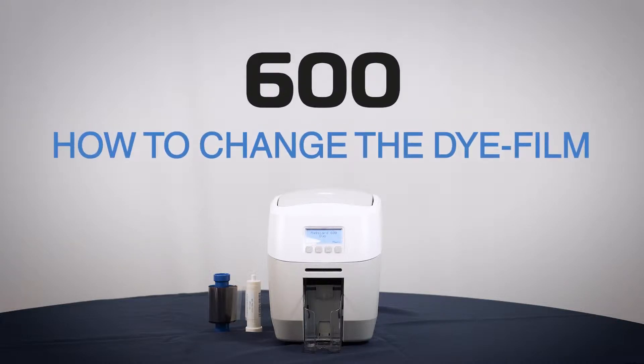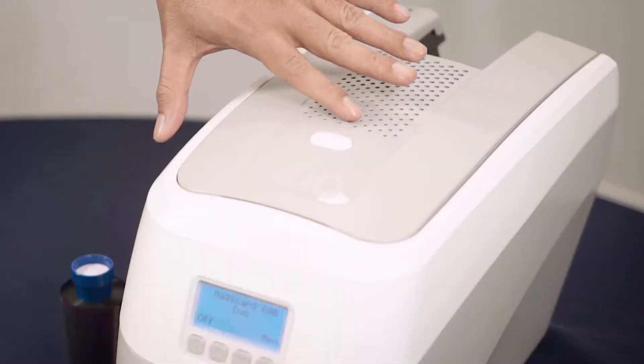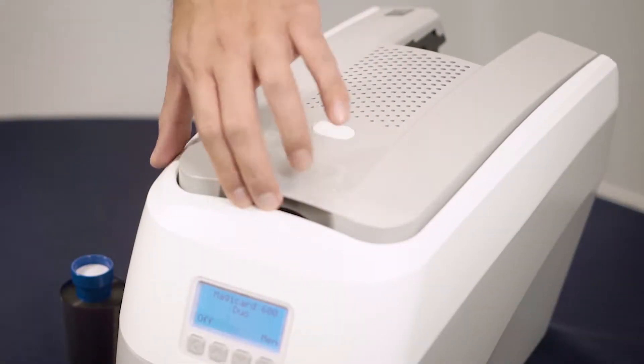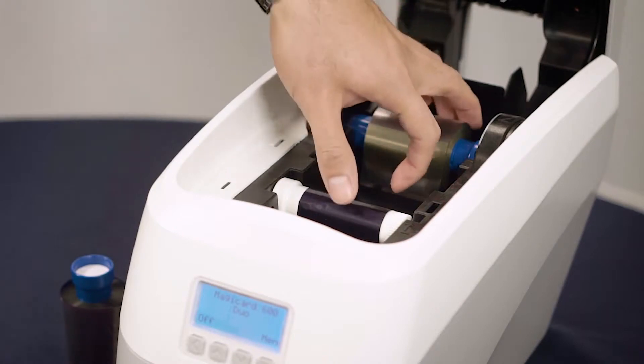This video will show you how to change the die film in your Magikard 600 printer. Press the button on top of the printer to release its lid and reveal the used die film.